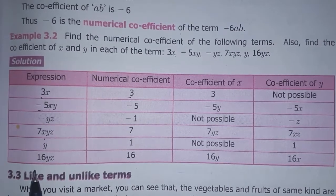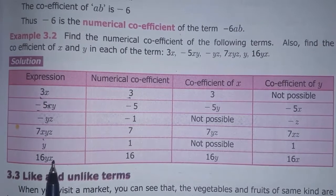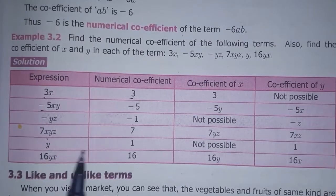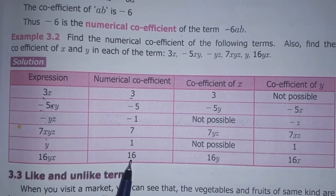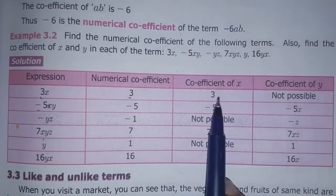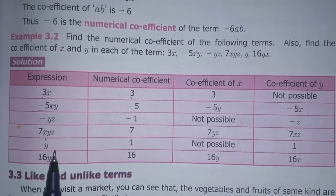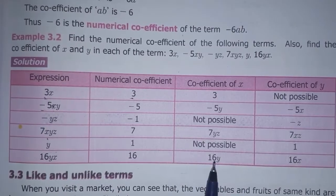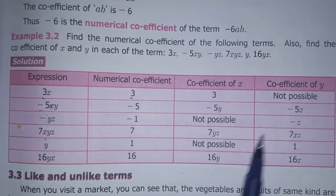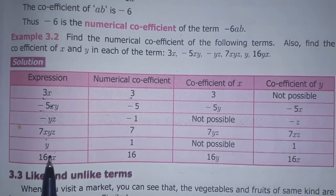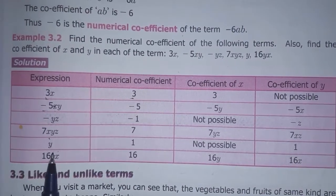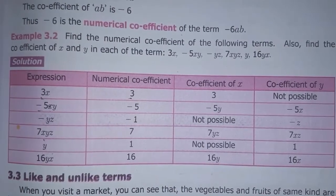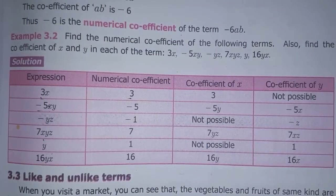For 16yx: numerical coefficient is 16. Coefficient of x — the remaining factor is 16y. Coefficient of y — the remaining factor is 16x. Very clear.